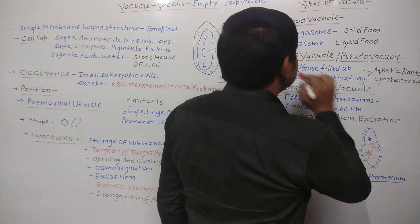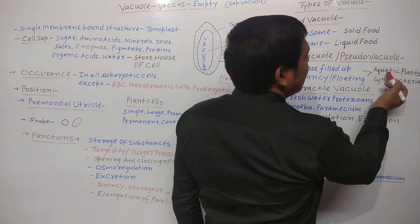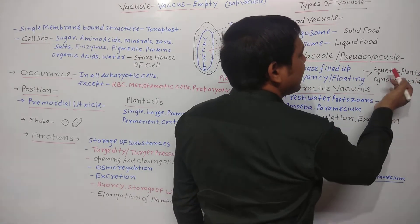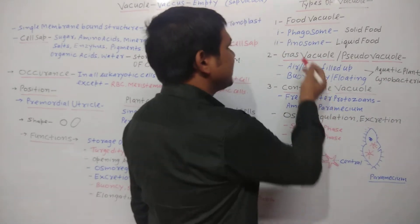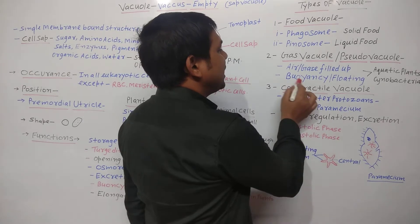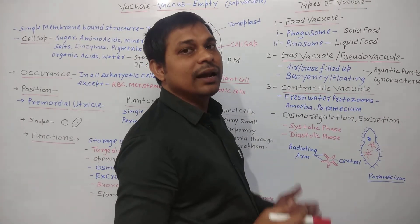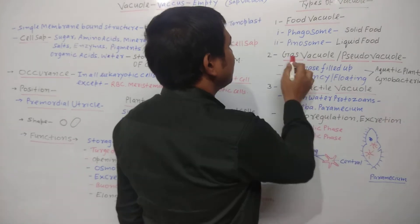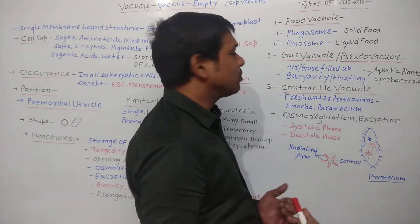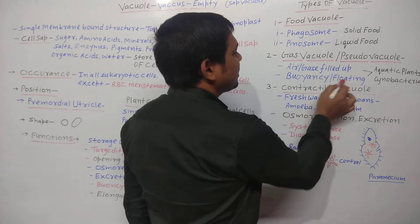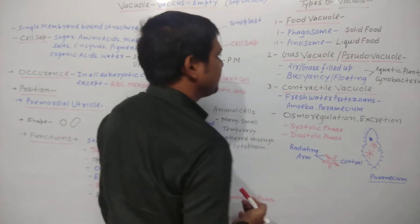Gas vacuoles are mainly present in aquatic plants, aquatic animals, and cyanobacteria. Gas vacuoles provide buoyancy or floating ability to the plant and animals, helping them float on the water surface.